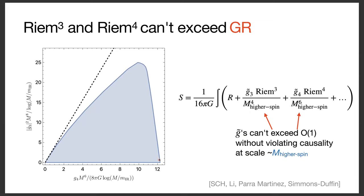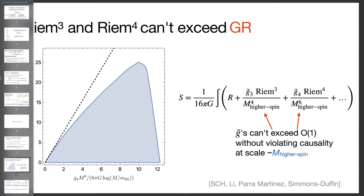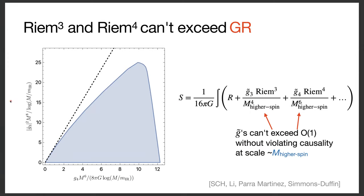This is one of our main plots. It shows the upper bound on G3 squared — the coefficient of our Riemann-cubed term. We show the bound that was rigorous but far from optimal, and then the optimal one. What's important about this plot is that the allowed region is bounded: the coefficient in units of the higher-spin scale cannot exceed order one without causing causality violation at the higher-spin scale. That is our main conclusion.